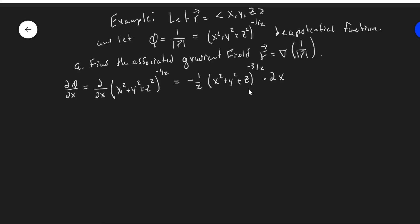So the 2 and the 1 half will cancel out. And then this x squared plus y squared plus z squared, raised to the negative 3 halves, this is magnitude R squared raised to the negative 3 halves, which means this is magnitude R to the negative 3, or 1 over magnitude R to the third. So it looks like this is minus x over magnitude R to the third.